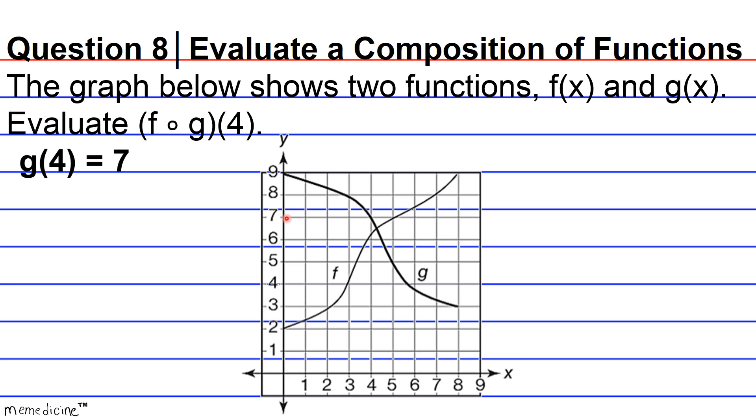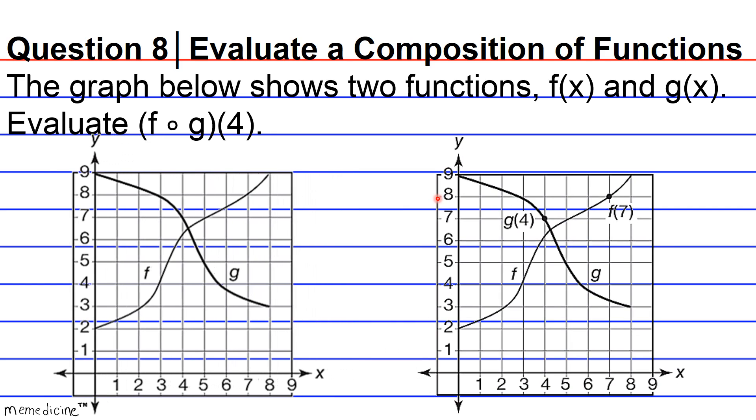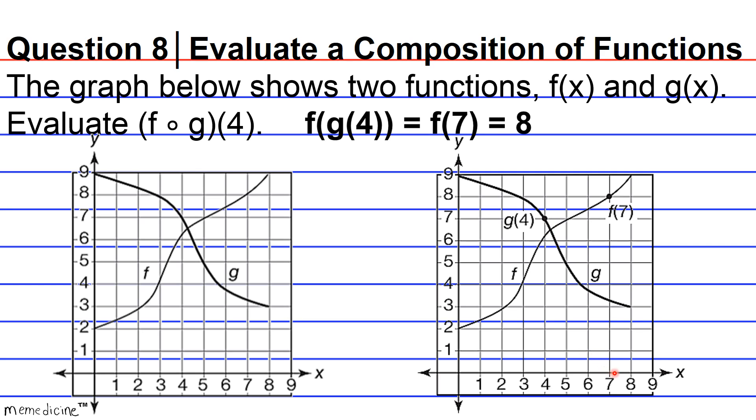Okay, so now we're going to take 7 and put it into the function f. And here we see we have an answer at f of 7. So basically, f of 7, we got g of 4, which is equivalent to 7. Now we're taking g of 4 and we're plugging it into f. And obviously, we get an output of 8.